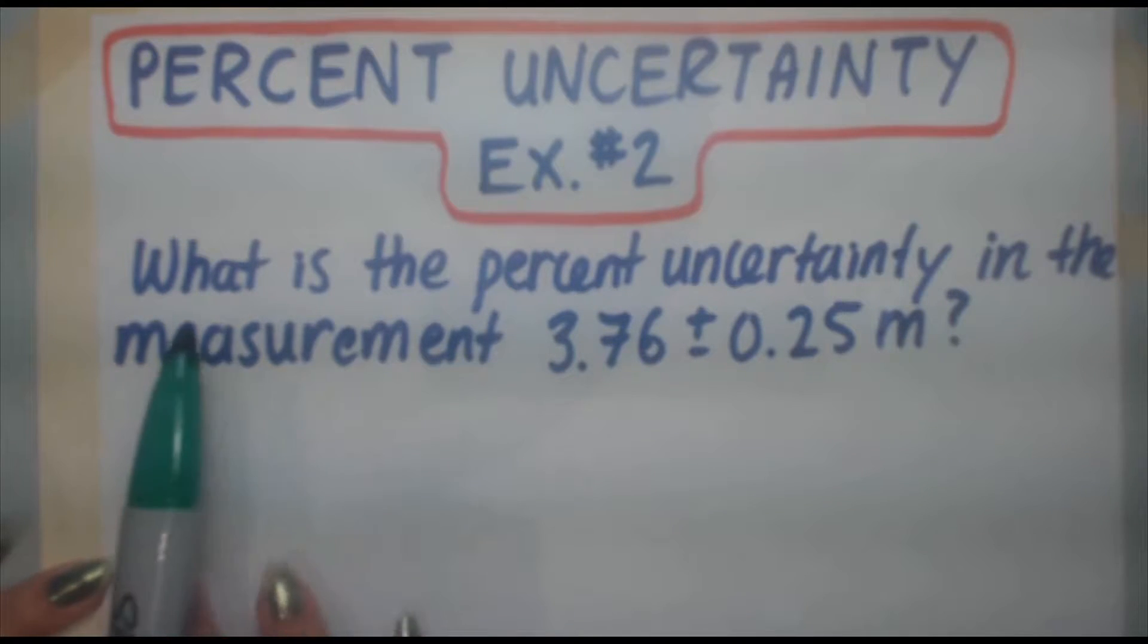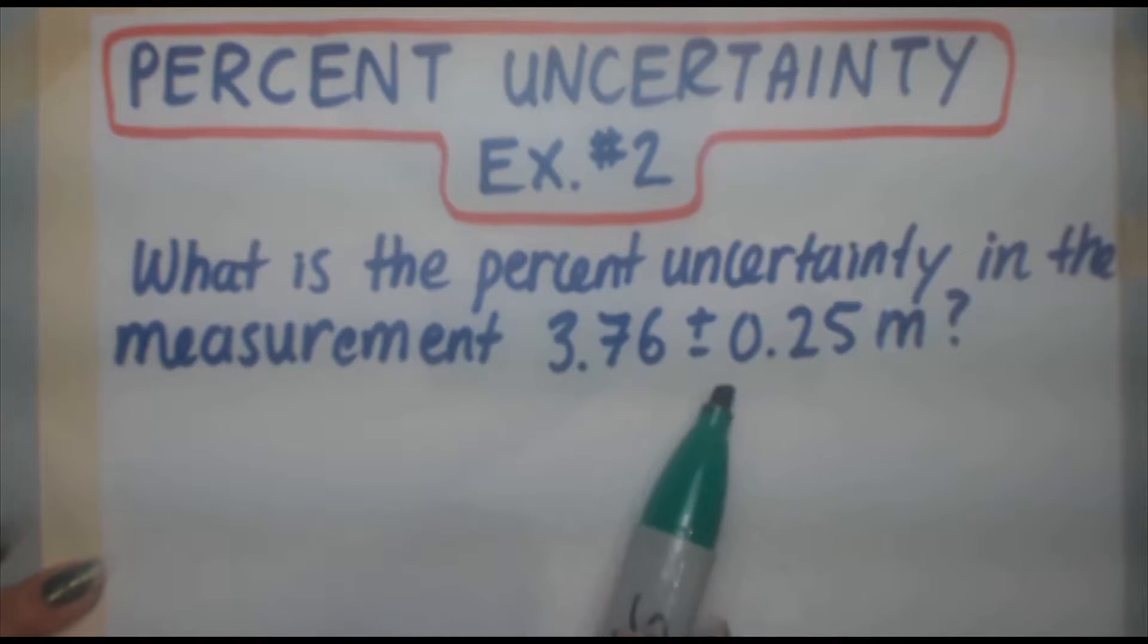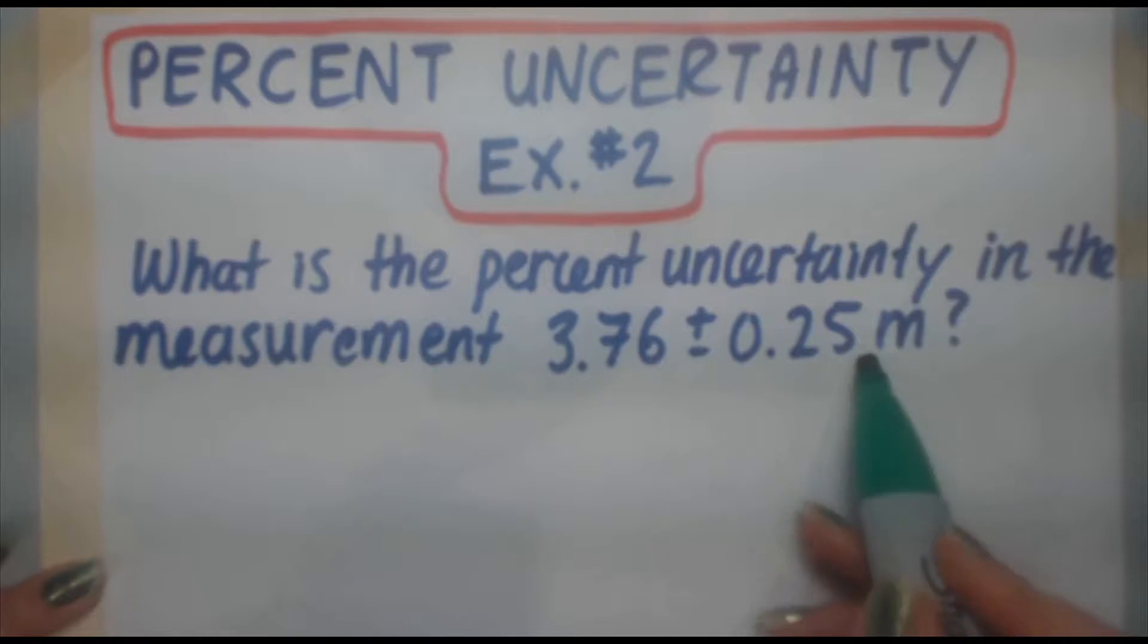So today's problem is this: What is the percent uncertainty in the measurement 3.76 plus or minus 0.25 meters? This is a little bit different than the previous example in that we are actually given the plus or minus the range for the measurement.